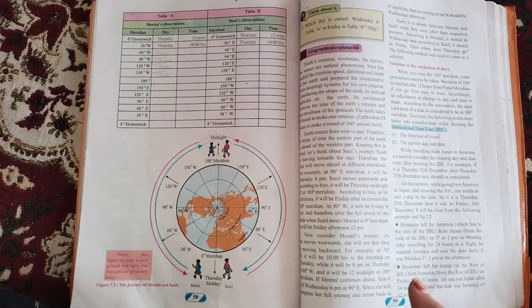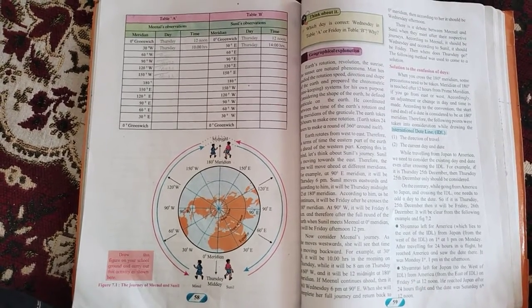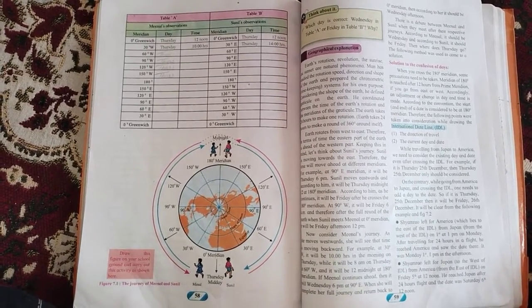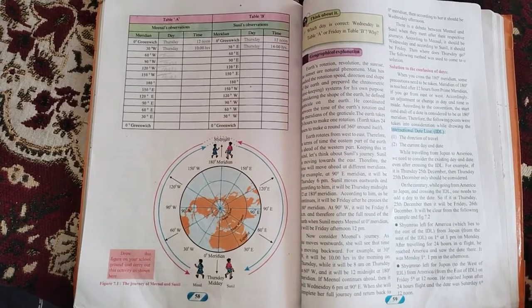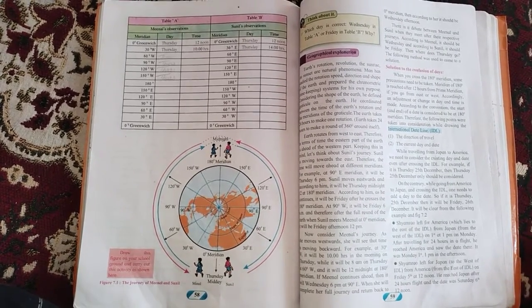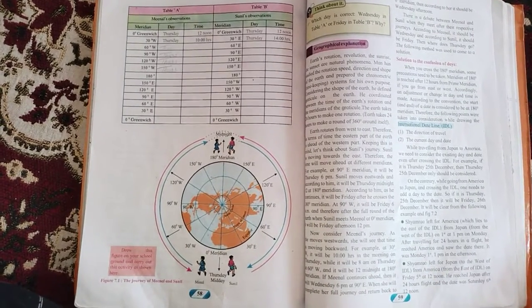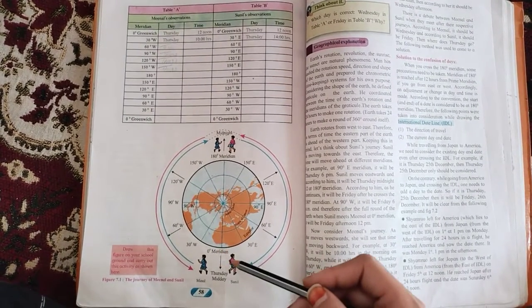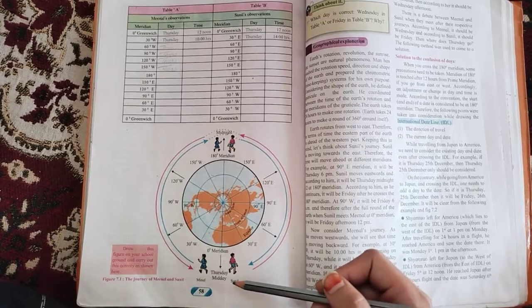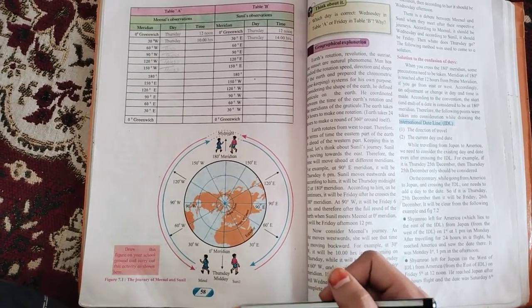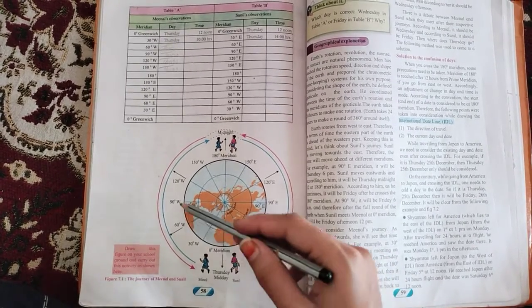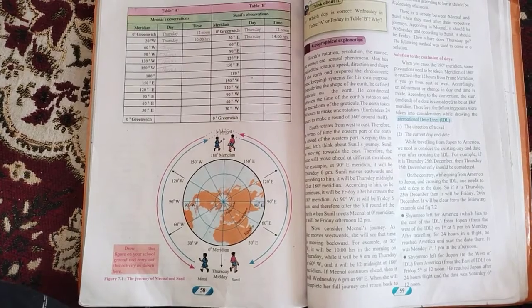Greenwich is ahead by 2-2 hours at every 30 degree latitude to the east of Greenwich time and it is 2-2 hours behind Greenwich time at every 30 degree latitude to the west of Greenwich.